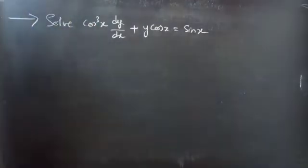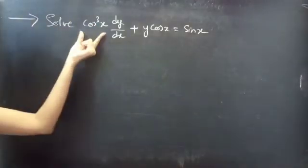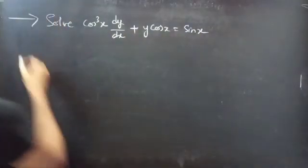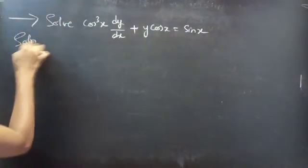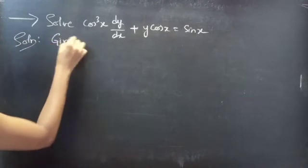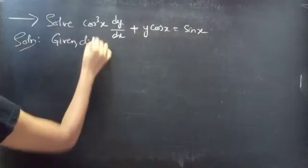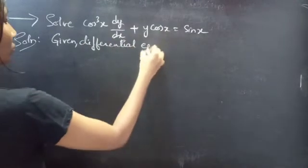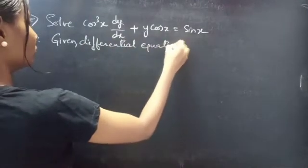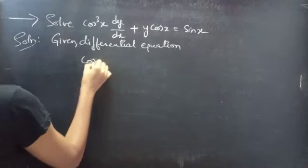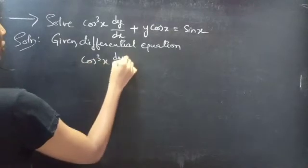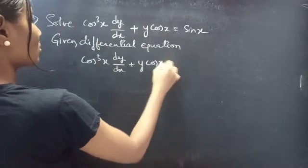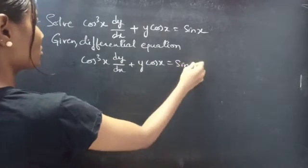Problem. Solve cos³x · dy/dx + y·cos x = sin x. Solution. Given differential equation: cos³x · dy/dx + y·cos x = sin x.